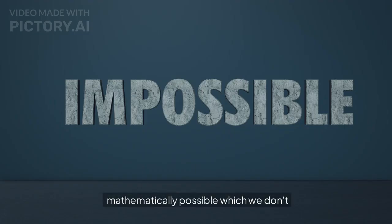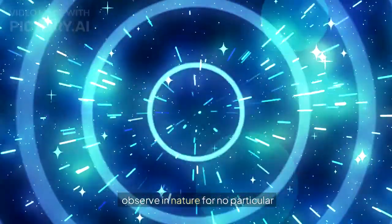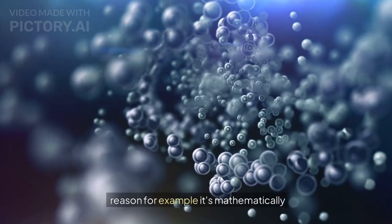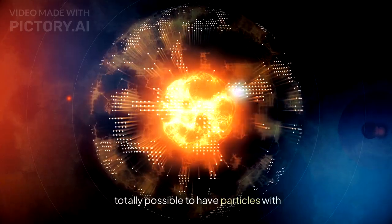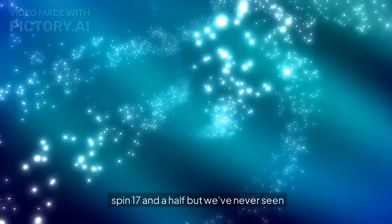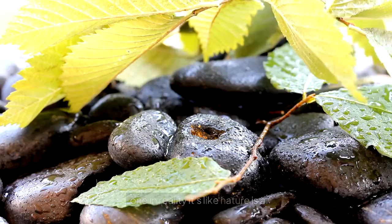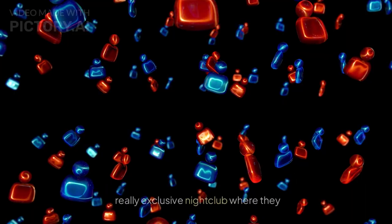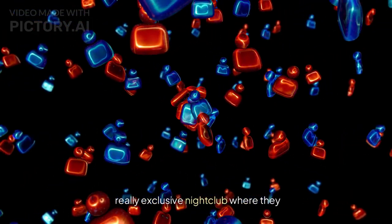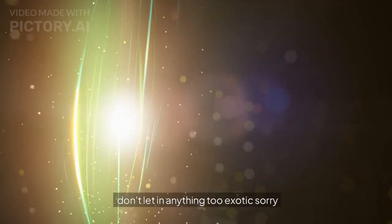There are a lot of things that are mathematically possible which we don't observe in nature for no particular reason. For example, it's mathematically totally possible to have particles with spin 17 and a half, but we've never seen one in reality. It's like nature is a really exclusive nightclub where they don't let in anything too exotic.